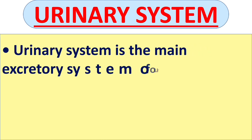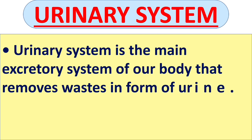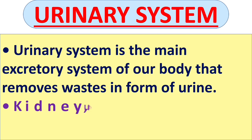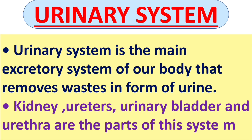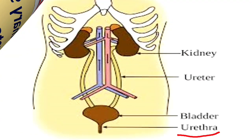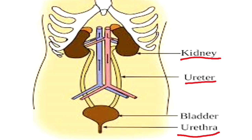Next is the urinary system. The urinary system is the main excretory system of our body that removes waste aids in the form of urine. Kidney, ureters, urinary bladder, and urethra are the parts of this system. As you can see in the diagram, the urinary system has kidney, ureter, urinary bladder, and urethra.